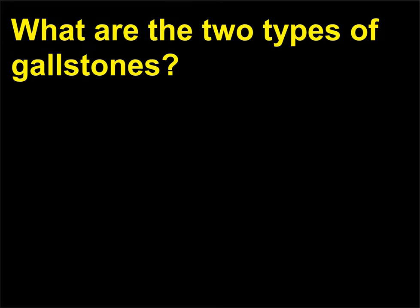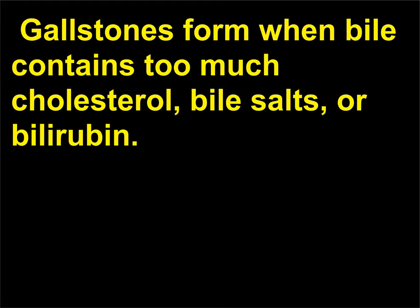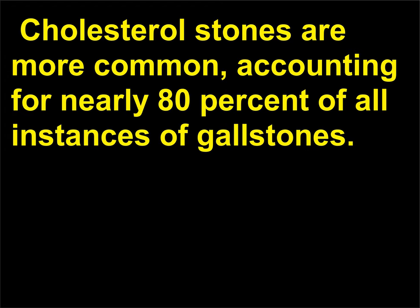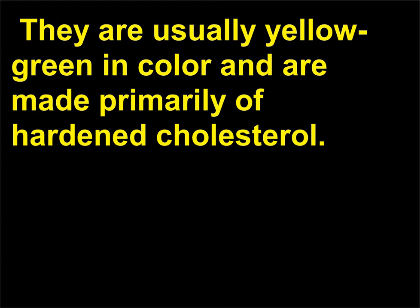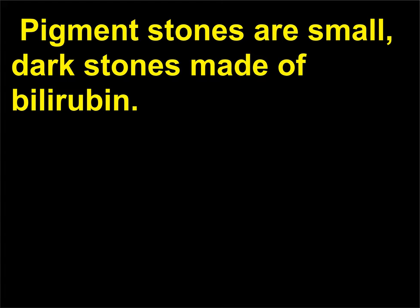What are the two types of gallstones? Gallstones are hardened masses (stones) of bile. They form when bile contains too much cholesterol, bile salts, or bilirubin. The two types are cholesterol stones and pigment stones. Cholesterol stones are more common, accounting for nearly 80% of all instances of gallstones. They are usually yellow-green in color and made primarily of hardened cholesterol. An insufficient amount of water may also contribute to their development. Pigment stones are small, dark stones made of bilirubin.